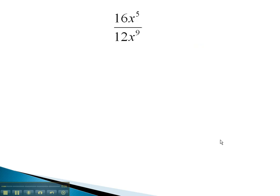For example, if we were to look at this problem, we could reduce the 16 and 12 by dividing them both by 4. Dividing out the 4 would give us a 4 in the numerator and a 3 in the denominator.